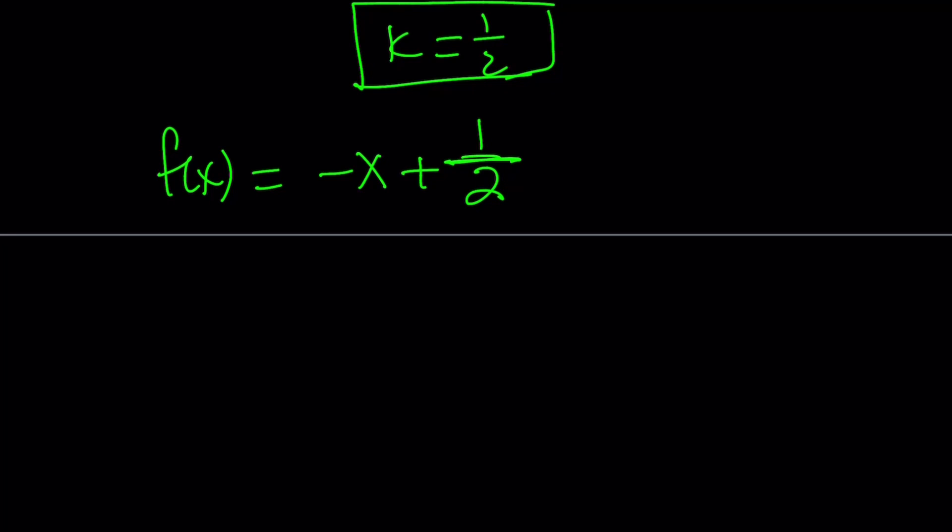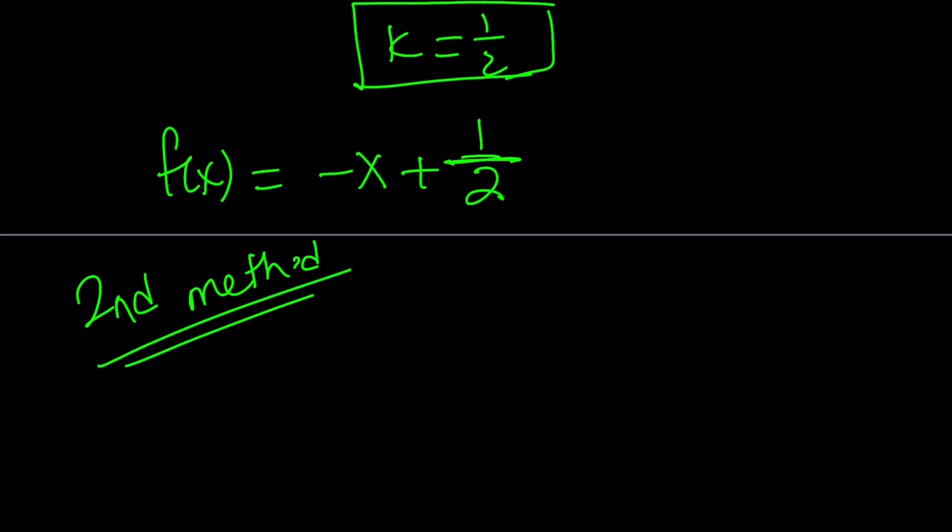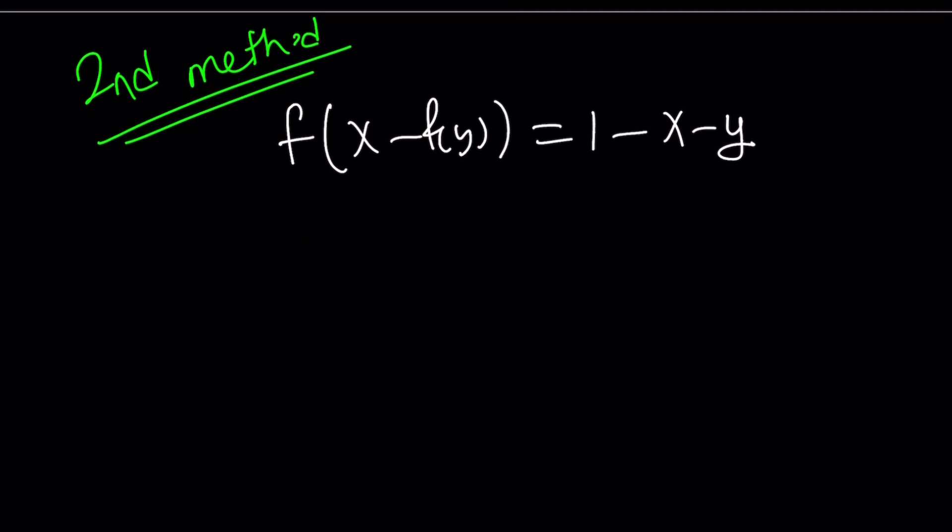Alright, let's go ahead and take a look at the second method. So our second method is different. Let me rewrite the original problem. f(x - f(y)) = 1 - x - y.